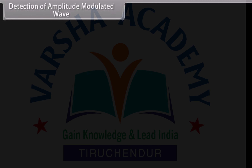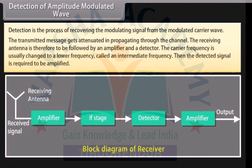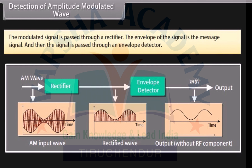Detection of amplitude modulated wave: Detection is the process of recovering the modulating signal from the modulated carrier wave. The transmitted message gets attenuated in propagating through the channel, so the receiving antenna is followed by an amplifier and a detector. The carrier frequency is usually changed to a lower intermediate frequency. The detected signal is then amplified. The modulated signal is passed through a rectifier, and the envelope of the signal — which is the message signal — is then extracted through an envelope detector.